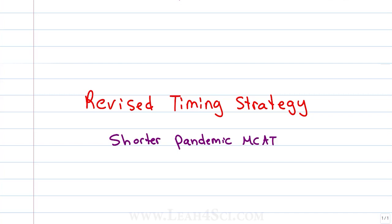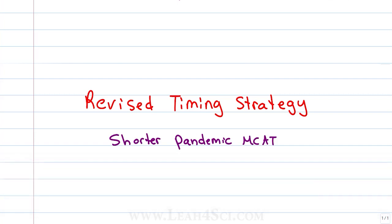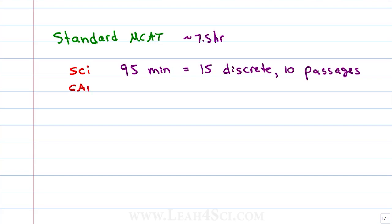In my previous timing video linked below or on my website leah4sci.com slash timing, we looked at how to set up your timing strategy for the science section and CARS section. But that was for the standard seven and a half hour MCAT where you had 95 minutes for each science section consisting of 15 discretes and 10 passages, and a 90 minute CARS section with 9 passages.